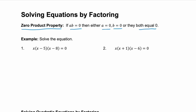Kind of confusing, but let's look at an example. Example one has three factors: x, the binomial x minus 5, and the binomial x minus 8. Those three factors are multiplied together and they equal zero.